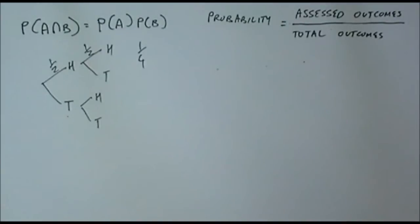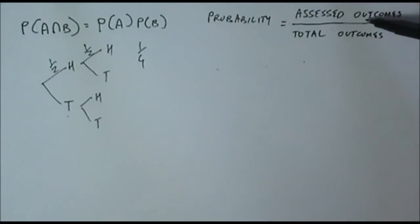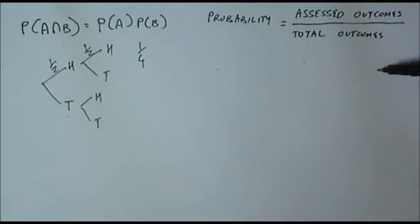For a coin, if we want to see what is the chance of having heads, we're looking specifically at heads. The assessed outcomes will be one for heads. Total outcomes will be heads or tails, so total outcomes is two. When we throw a coin, it's going to be one out of two.